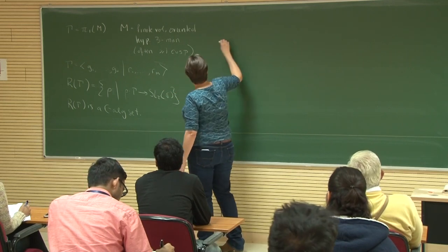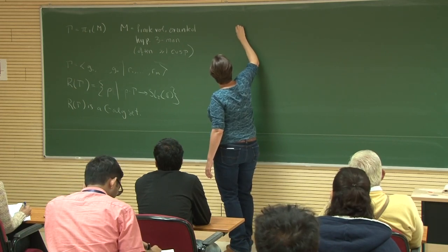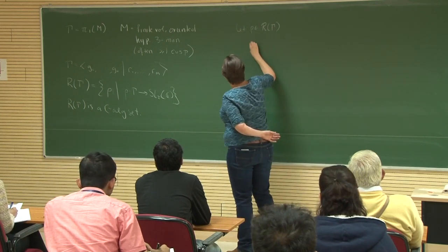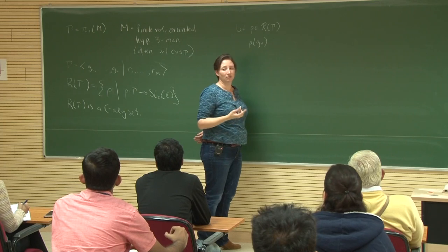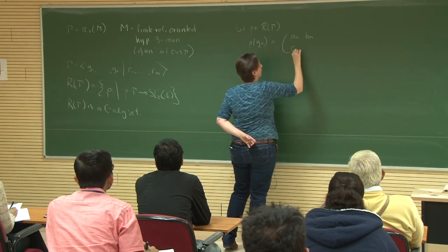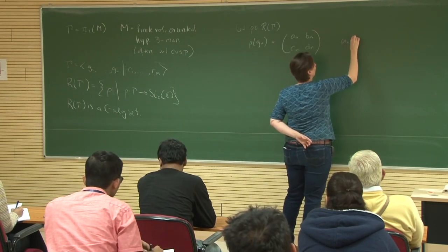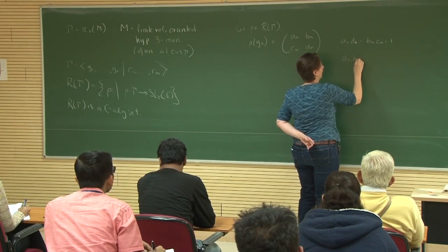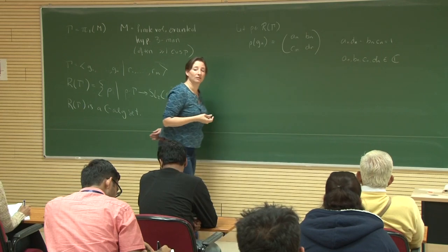Let's take a look at what happens to one of the generators. For a representation rho, what does it do to the generator g_n? It has to send it to a 2×2 matrix — say A_n, B_n, C_n, D_n — and it's SL₂ℂ, so the determinant is 1. The entries are complex because it's SL₂ℂ.